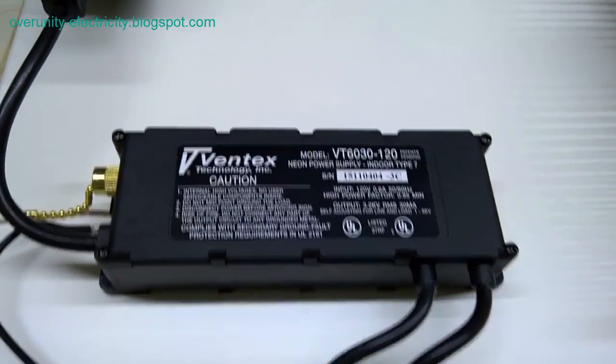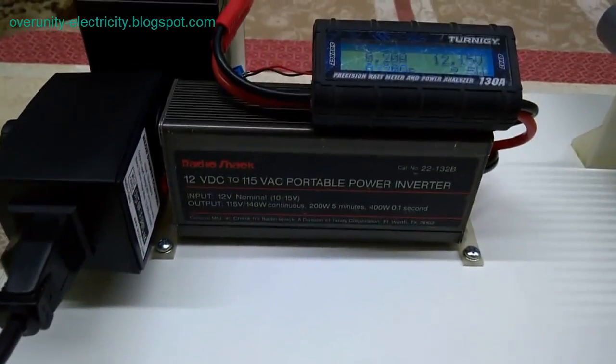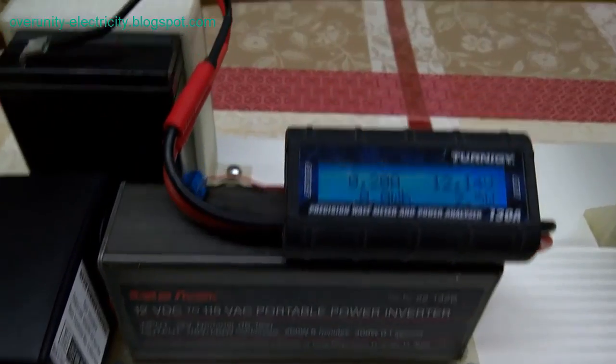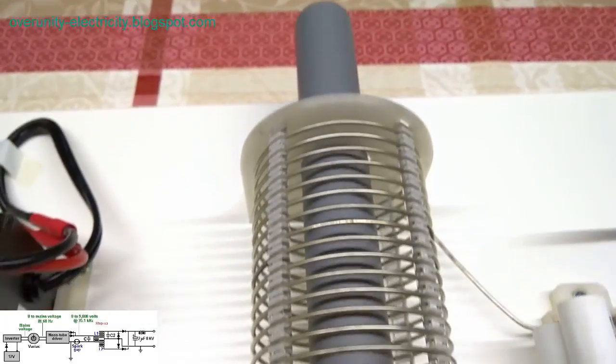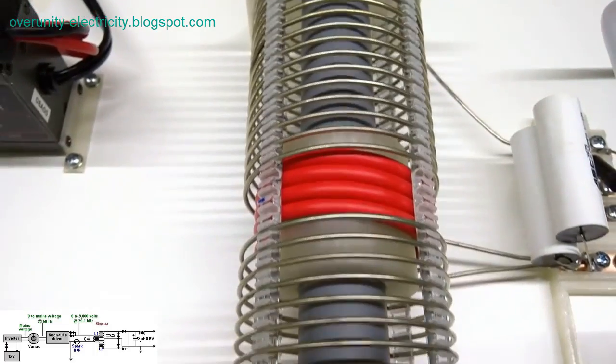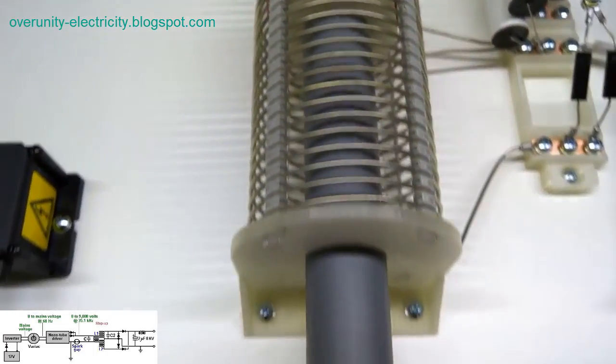The Basics of Induction Coils. Central to the operation of Donald Lee Smith's magnetic generator are induction coils. These coils serve as the fundamental building blocks for transforming voltage and generating high-voltage outputs. By manipulating the number of turns in primary and secondary coils, the voltage can be stepped up or down.